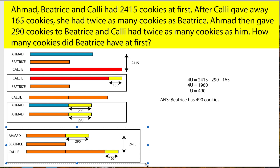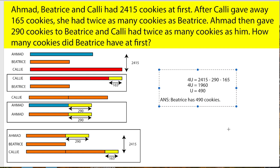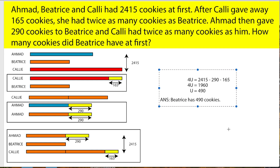In order to find 4 units, you take 2,450 minus 290 minus 165, which equals 1,960. So 1 unit equals 1,960 divided by 4, which equals 490. That means Beatrice has 490 cookies.